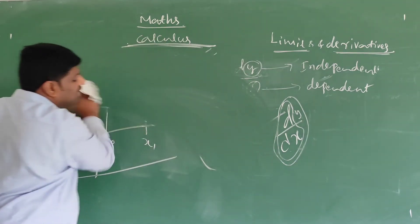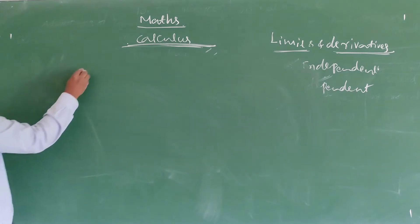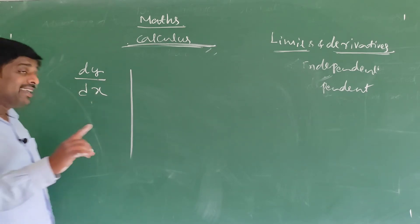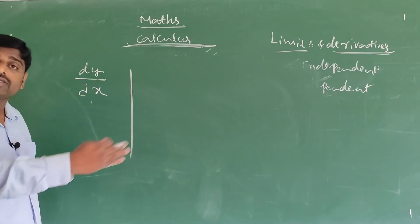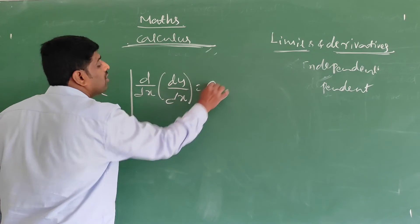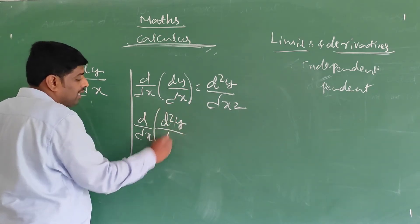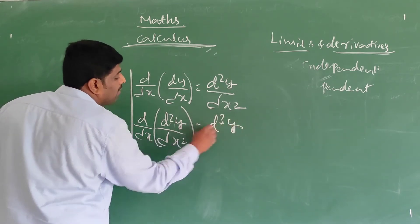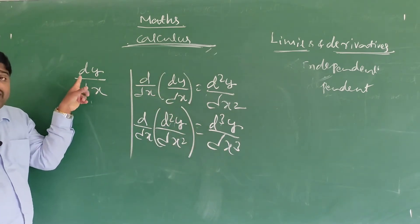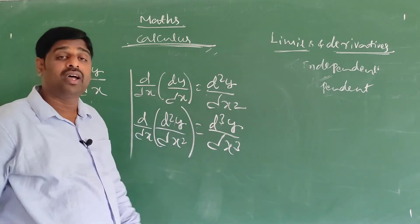What is the difference between differentiation, differentiability, and derivative? dy by dx — the rate of change of y with respect to x — is called derivative. Differentiation means the process of finding the derivatives. For example, d/dx of dy/dx equals d²y/dx², and d/dx of d²y/dx² equals d³y/dx³. The process of finding the derivatives is called differentiation.